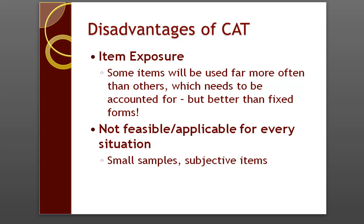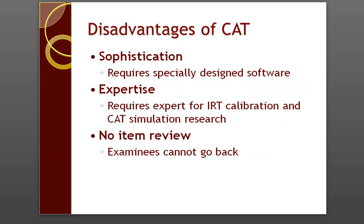However, item exposure is still better than fixed forms. Another disadvantage is that CAT is not feasible or applicable for every situation. If you have sample sizes too small to use item response theory, CAT is not relevant for you. The same applies for subjectively scored items — you need items to be scoreable in real time so the CAT can score the item and move on. If you're dealing with essay items that require a teacher to review and assign a score several days later, you cannot use a CAT algorithm. CAT also requires a lot of sophistication in terms of software — a specially designed testing platform — and a lot of expertise, meaning someone on your staff or a consultant who can handle IRT calibration and CAT simulation research to ensure the test is valid. And another disadvantage is that there is no item review — examinees cannot go back.